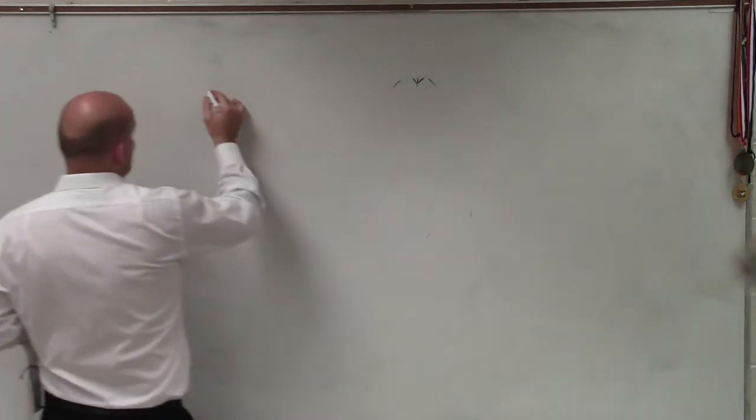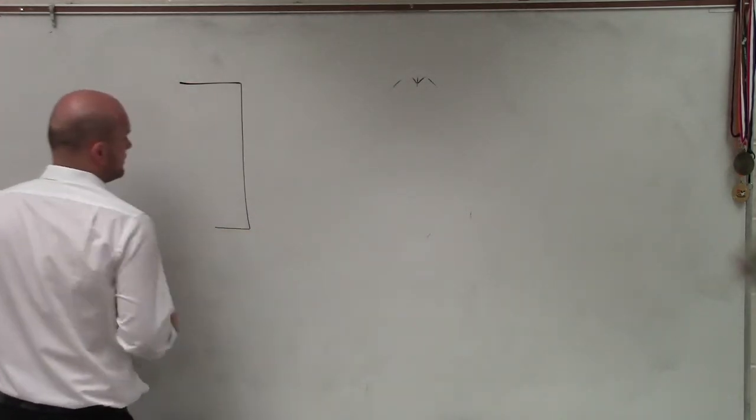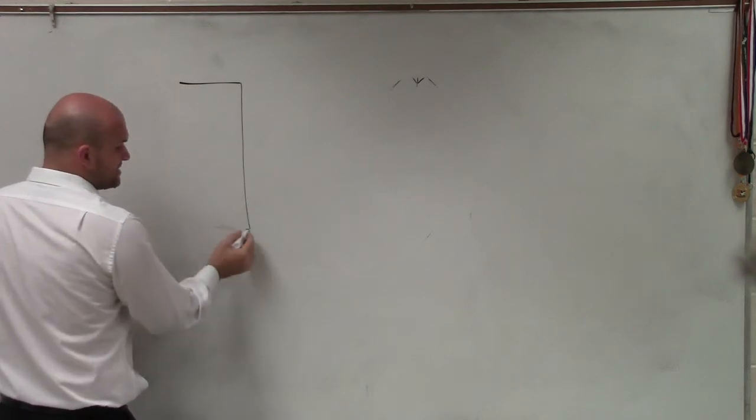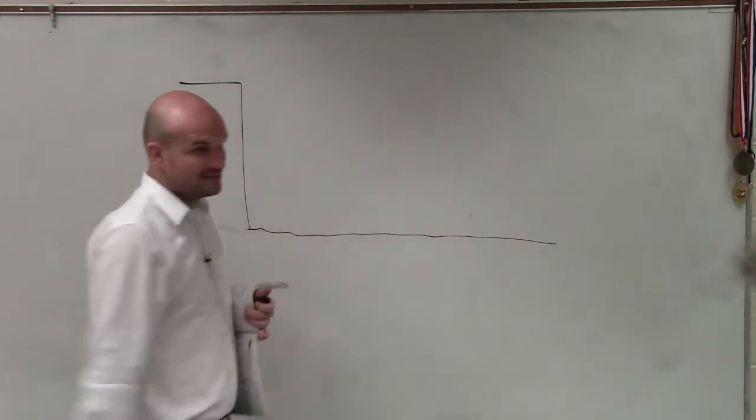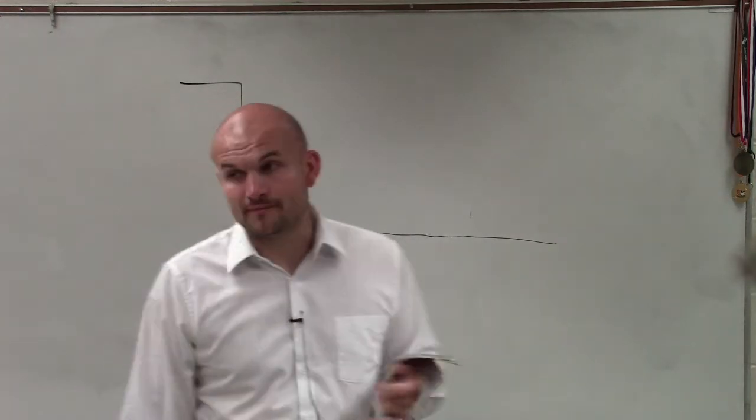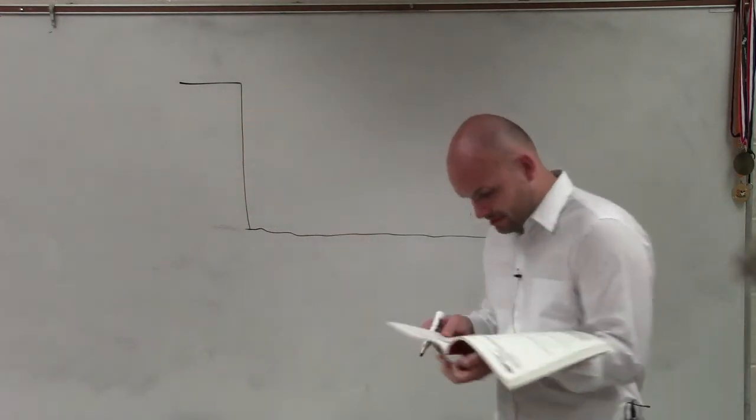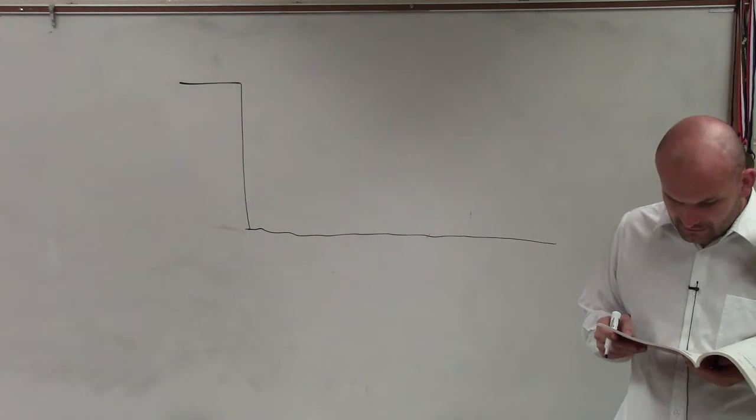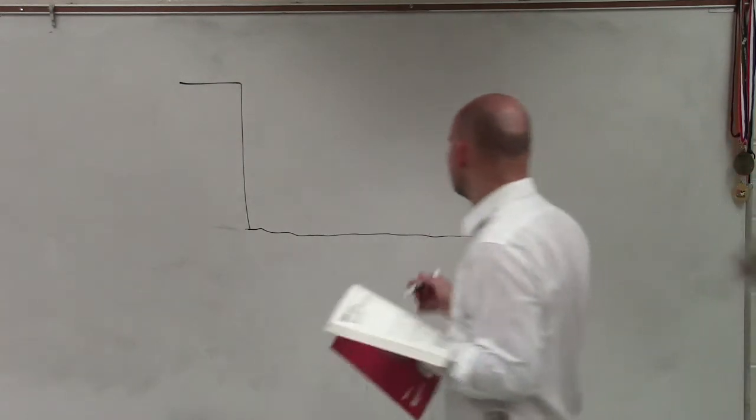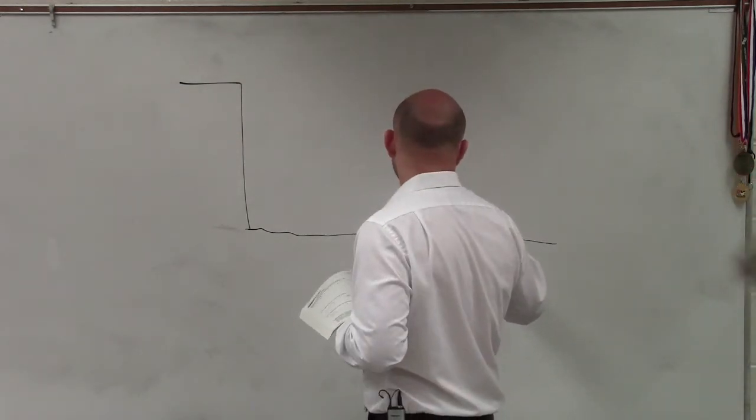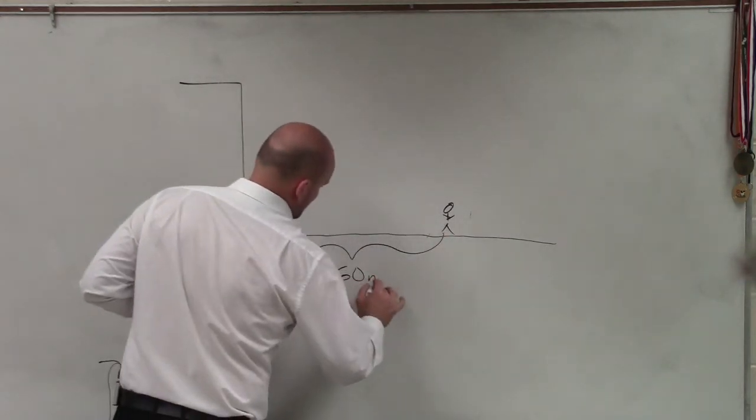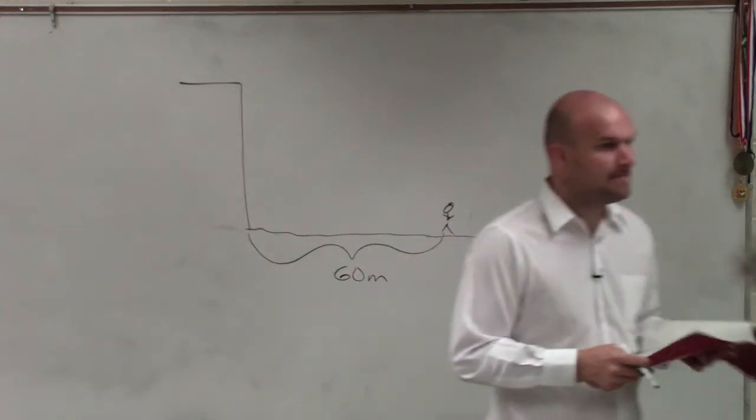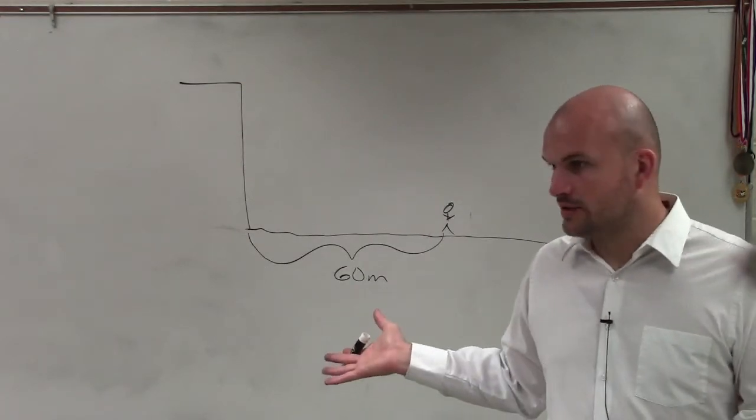So we have a canyon. Let's draw a canyon cliff, right? And he's at the base - that means there's a floor, correct? He's at a floor. So he's about 60 meters from the base of the cliff. Therefore we have now a location - 60 meters from the base of the canyon. Is everything right there?